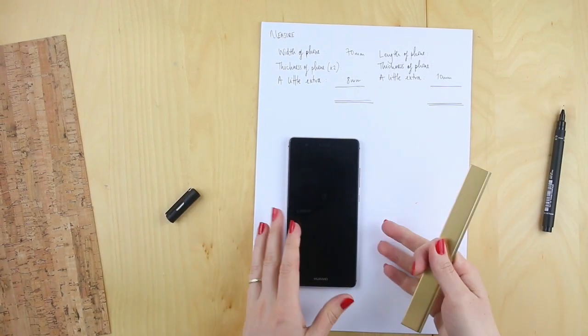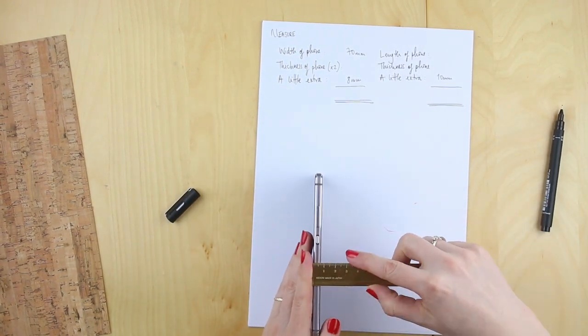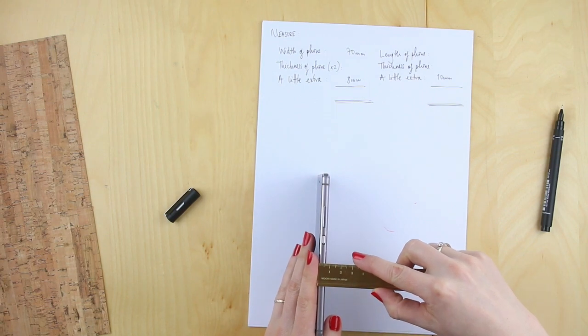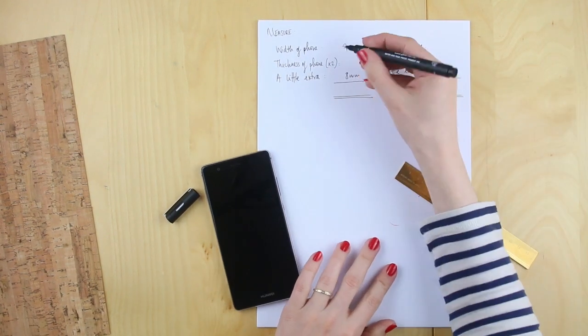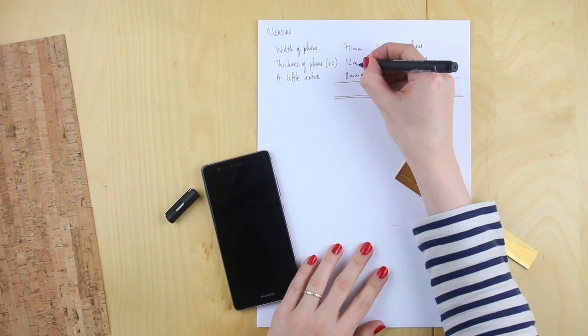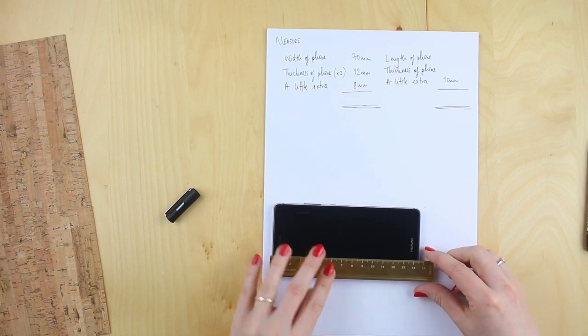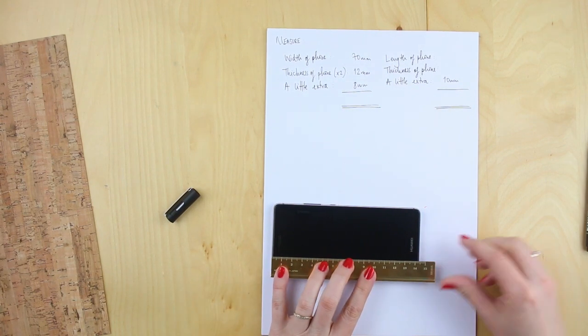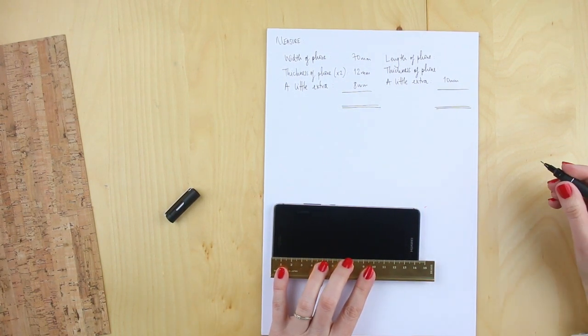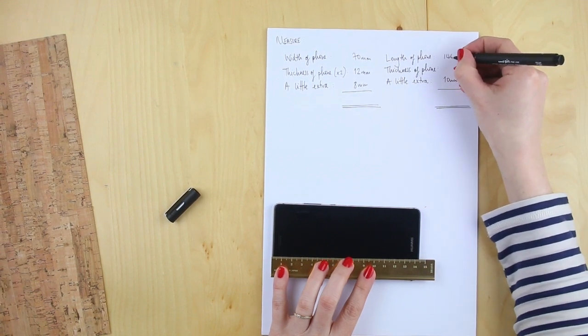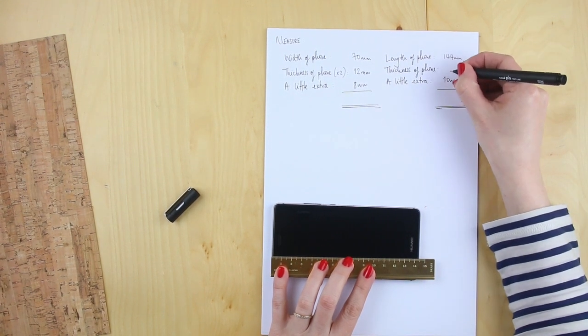Then you're looking at the thickness of your phone and you're going to double it. So here it's six millimeters so I'm writing down 12. Now I'm looking at the length of the phone and the thickness we already know is six.